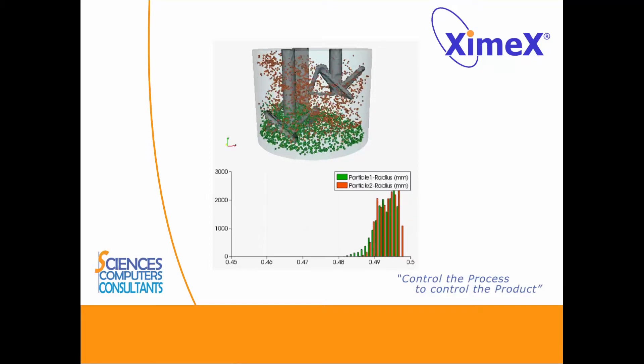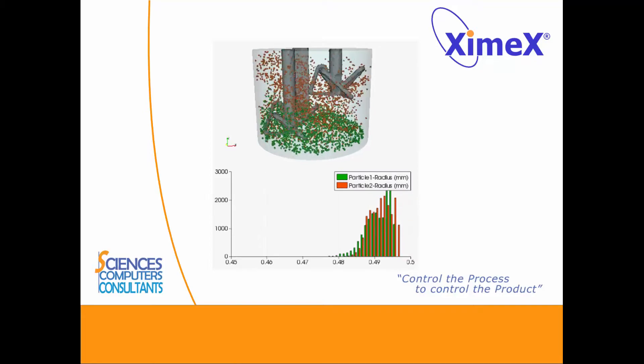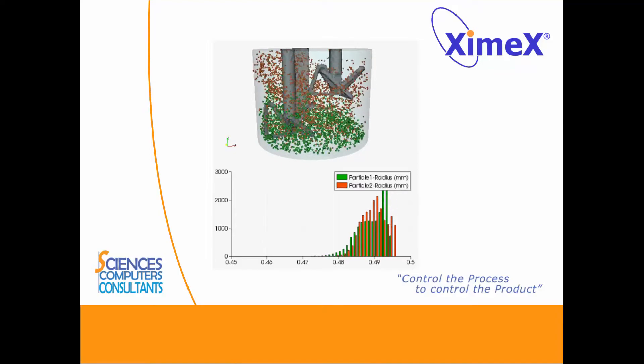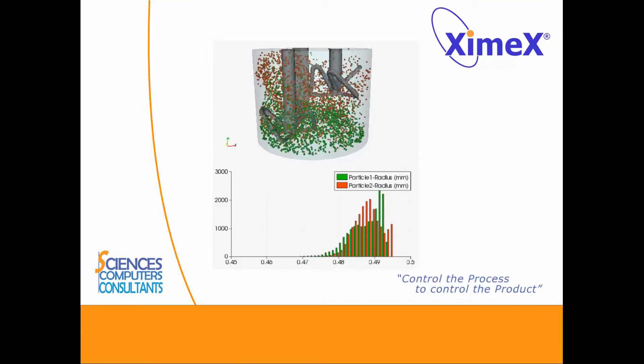Particles in orange at the higher position are more impacted because of the initial position between the two blades. The ratio of erosion and radius distribution are helpful to optimize a dispersive and homogeneous mixing.